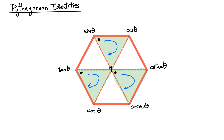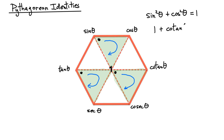The superhex can also give us Pythagorean identities. Three triangles inside the hexagon are shaded, each with a dot in the upper left corner. Going clockwise from the dot, sum the squares of the first two terms to get the third. First: sine squared plus cosine squared equals one. Second: one plus cotangent squared of theta equals cosecant squared of theta. Third: tangent squared plus one equals secant squared of the angle theta.